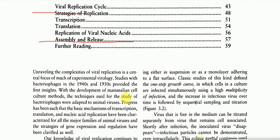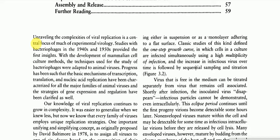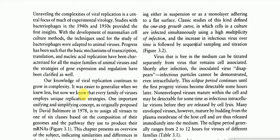Chapter 3 is Viral Replication. The complexity of virus replication is a central focus of much of experimental virology. Studies with bacteriophages in the 1940s and 1950s provided the first insights, and with the development of mammalian cell culture methods, those techniques were adopted to animal viruses. The basic mechanisms of transcription, translation, and nucleic acid replication have been characterized for all major families of animal viruses, and strategies of gene expression and regulation have been clarified as well.